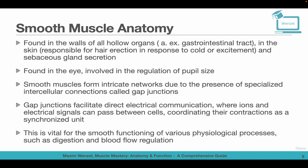Smooth muscle is found in the walls of all hollow organs — not in the heart, but every other hollow organ. For example, the gastrointestinal tract, and in the skin where smooth muscle is responsible for hair erection in response to cold or excitement, and sebaceous gland secretion. You will also find smooth muscle in the eye.